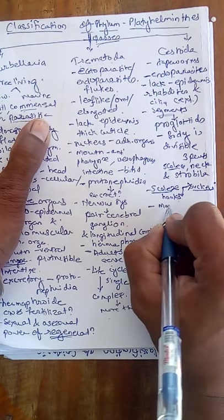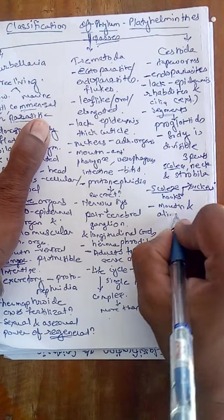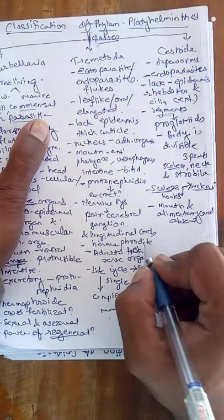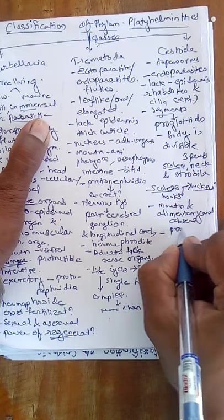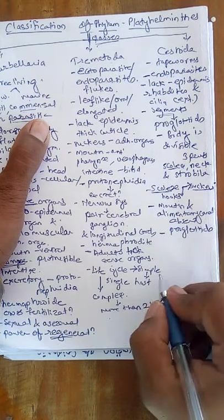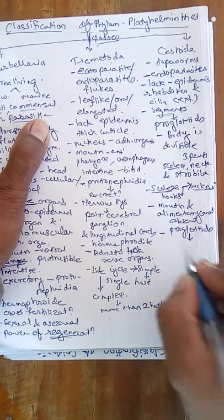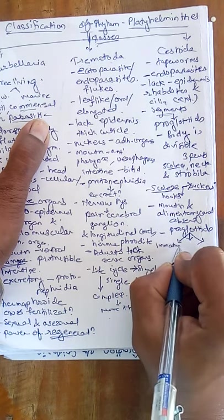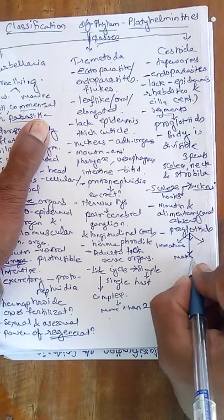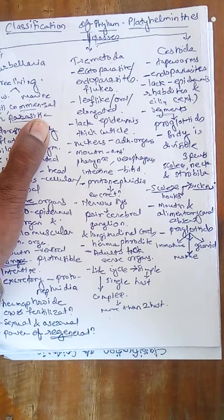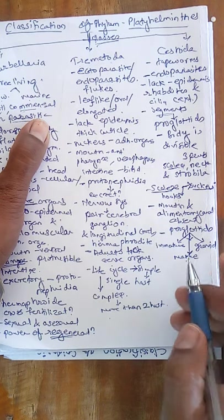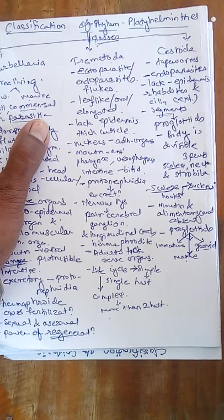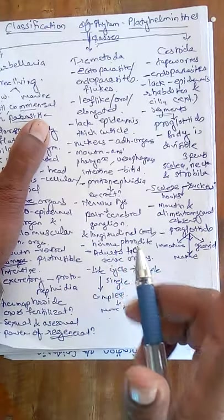The mouth and alimentary canal are totally absent. There are three types of proglottids: immature proglottids, mature proglottids, and gravid proglottids. The gravid proglottids detach or shed off from the original body by the process of apolysis.